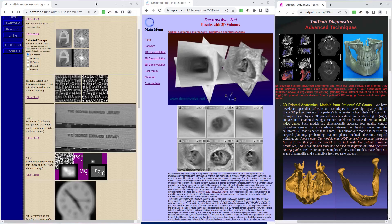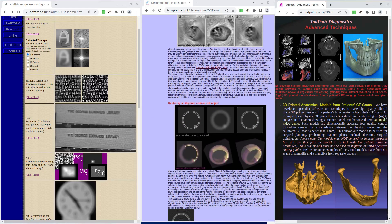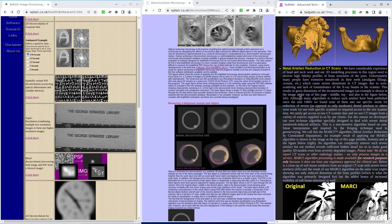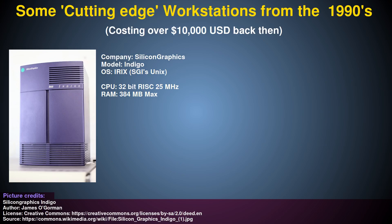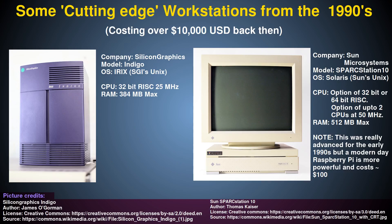Image processing can be very computationally intensive. Until relatively recently such computing power was only available on powerful expensive workstation research computers, which mostly used the Unix operating system. Given C's close association with Unix, a C compiler would usually be available for all such Unix workstations, and C would efficiently use all their computing resources to make efficient fast programs. C was therefore the natural choice for a lot of early image processing research.